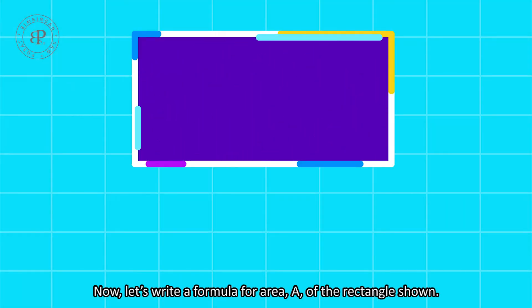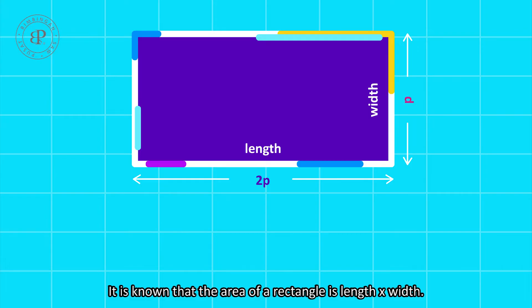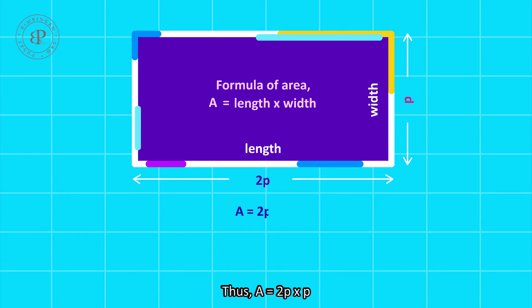Let's write a formula for area A of the rectangle shown. It is known that the area of a rectangle is length times width. Thus, A equals 2P times P, which equals 2P squared.